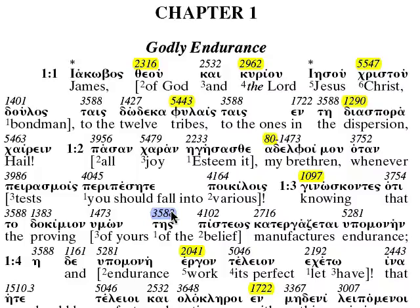We'll get to a lot of this more when we get into the prepositions, and we will explain that more then. So it begins here — 'Iakovos,' that's James. The Jacobites were the people that followed King James in England.